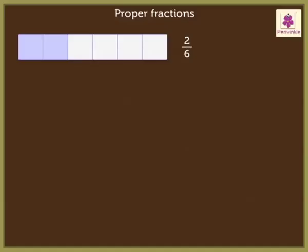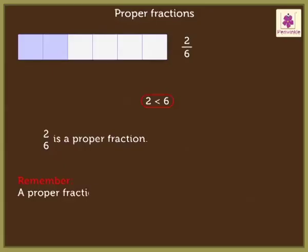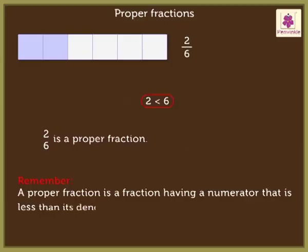Here, in the fraction obtained, the numerator is smaller than the denominator. So, we say that two upon six is a proper fraction. Remember, a proper fraction is a fraction having a numerator that is less than its denominator.